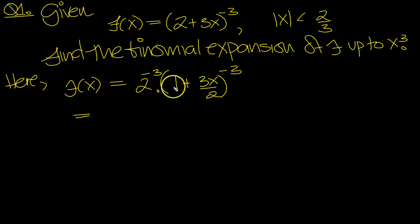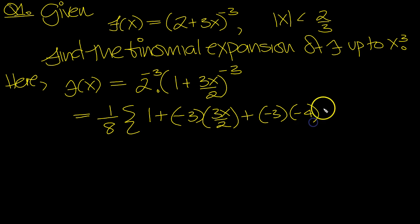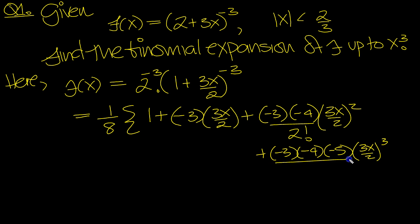And then use properties of indices, which is 1/8 times... Now use the binomial theorem: 1 + n(3x/2) + n(n-1)(3x/2)²/2! + n(n-1)(n-2)(3x/2)³/3! + dot dot dot.